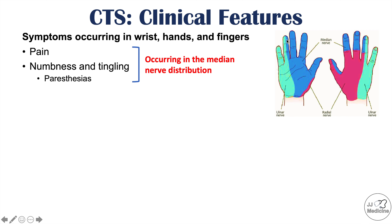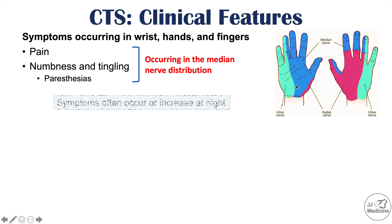If you were to touch the half of the ring finger closest to the middle finger, there would be numbness, but touching the other half could be normal because that part is supplied by the ulnar nerve. It is also noted that symptoms often occur or worsen at nighttime — patients may have issues during the day, especially with repetitive activities, and then find symptoms are worse at night.